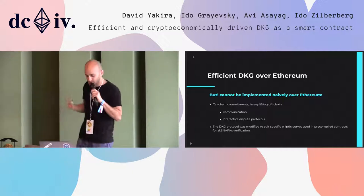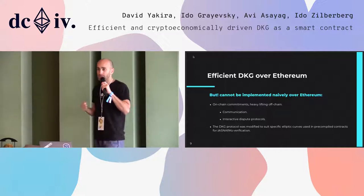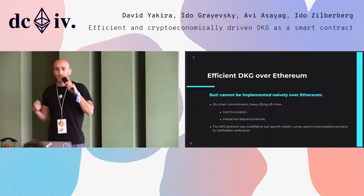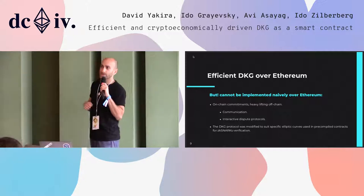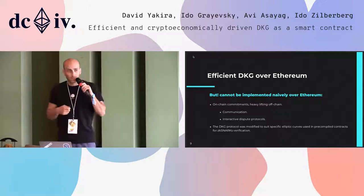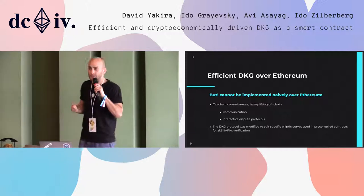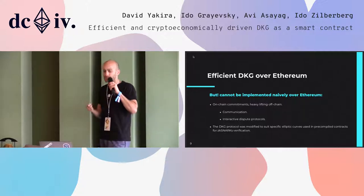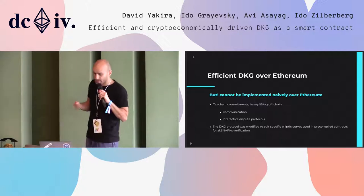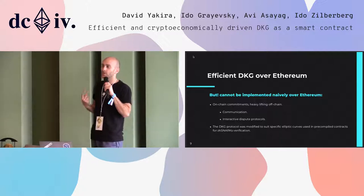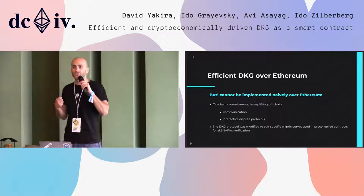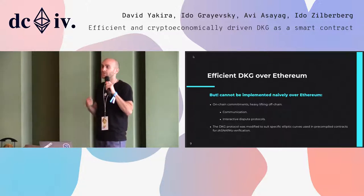This is very expensive and cannot be done naively on Ethereum. So we use an interactive protocol between the participant who is complaining and the participant being complained against — in the spirit of TrueBit. This lets us arrive at a situation where only one on-chain operation has to be done in order to find out who is faulty.